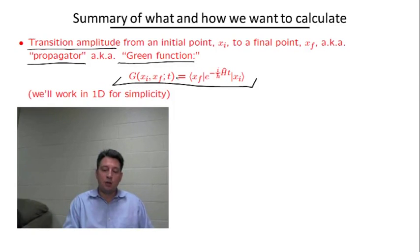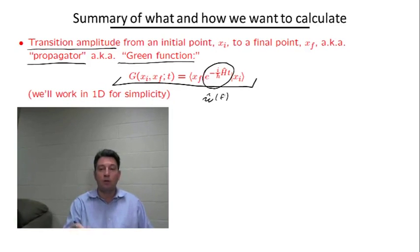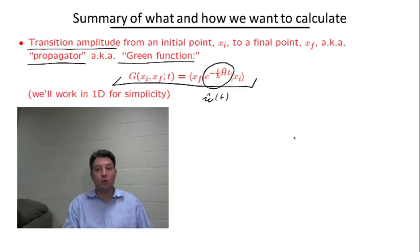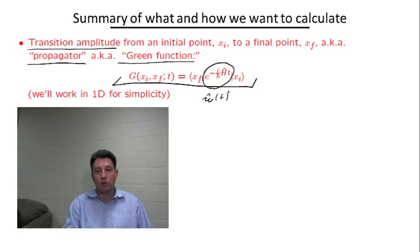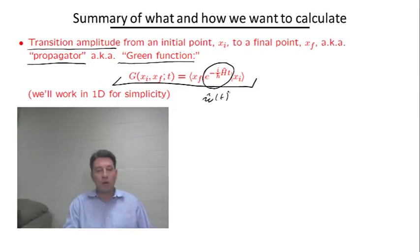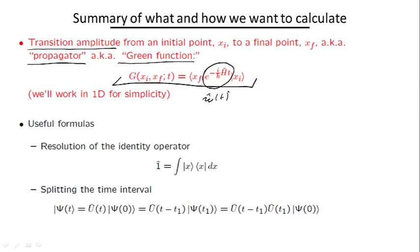The main difficulty in calculating this object once again is the presence of this evolution operator, which is an exponential of the Hamiltonian. To calculate this exponential of an operator is a very tricky business. The goal of the remaining calculation is going to be to simplify this expression so that it doesn't really contain any operators, and we deal with regular mathematical quantities rather than operators. In doing this simplification, we're going to rely on two very useful mathematical — or physical, actually — formulas.